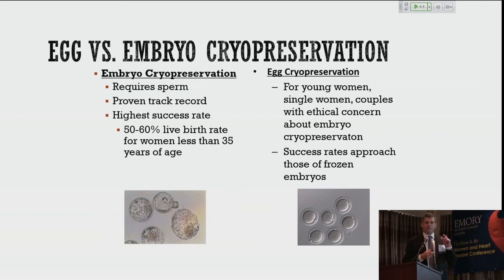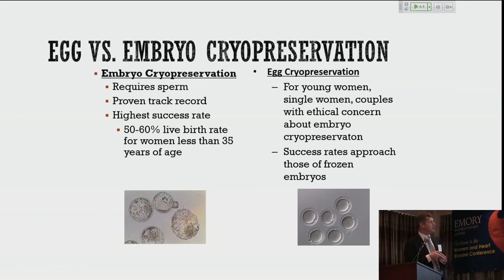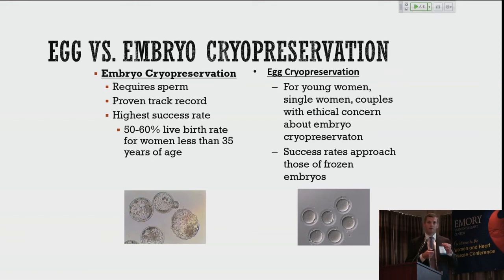A blastocyst stage embryo is the mature embryo we put back in the woman's uterus. In a woman under 35 at Emory, we have about a 65% chance of live birth when we transfer that embryo. We can do an embryo transfer, or we can freeze embryos. With modern vitrification technique — very rapid cooling — we're able to freeze embryos so that survival rates exceed 95% when they come out of cryopreservation, with a very high chance of being alive, viable, and able to result in pregnancy.